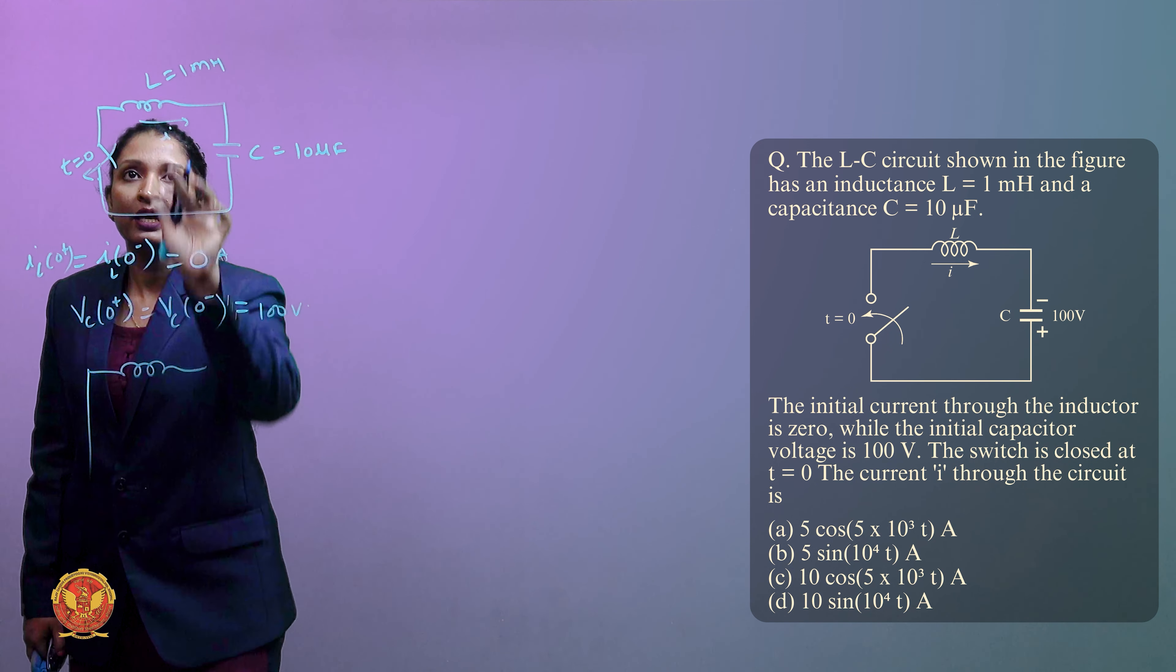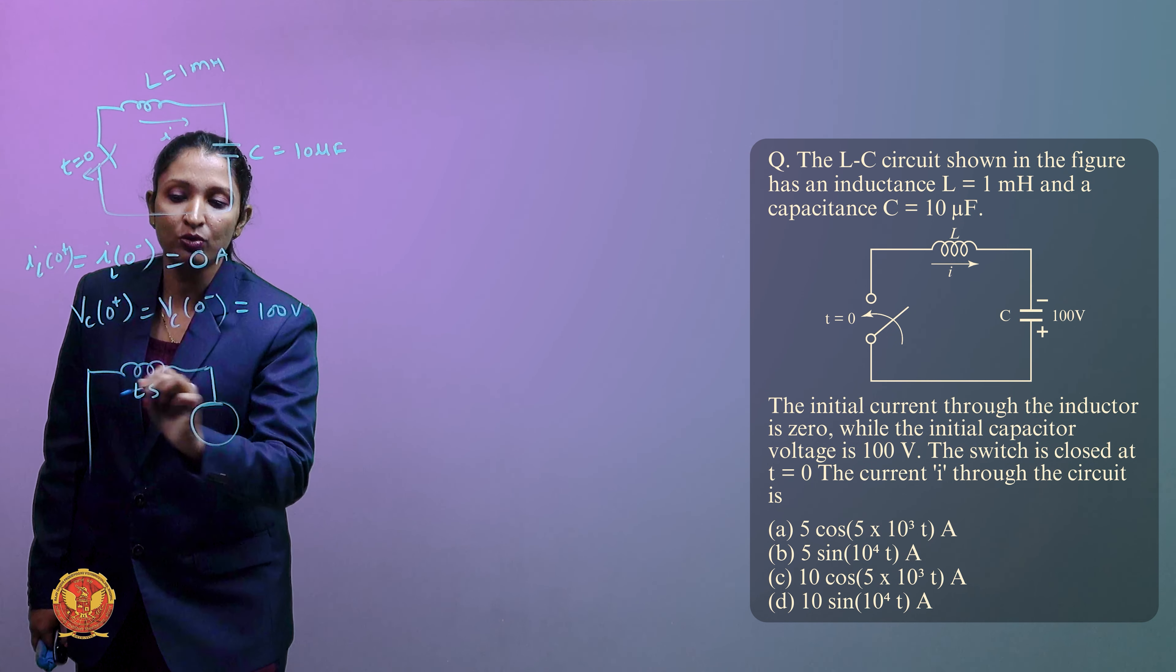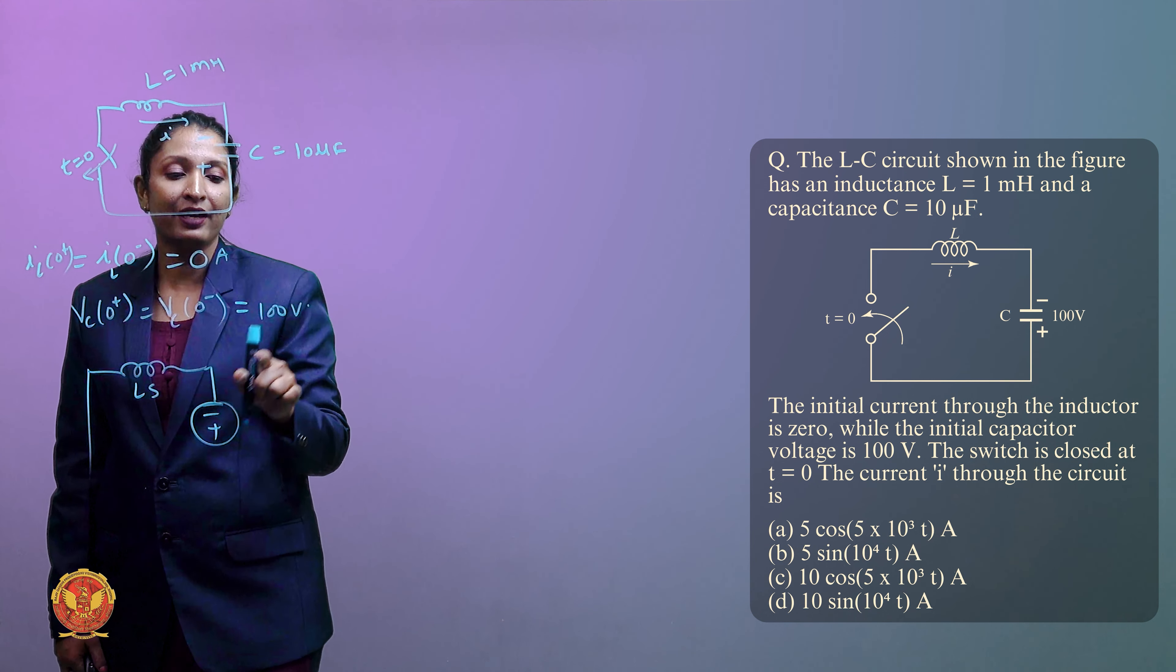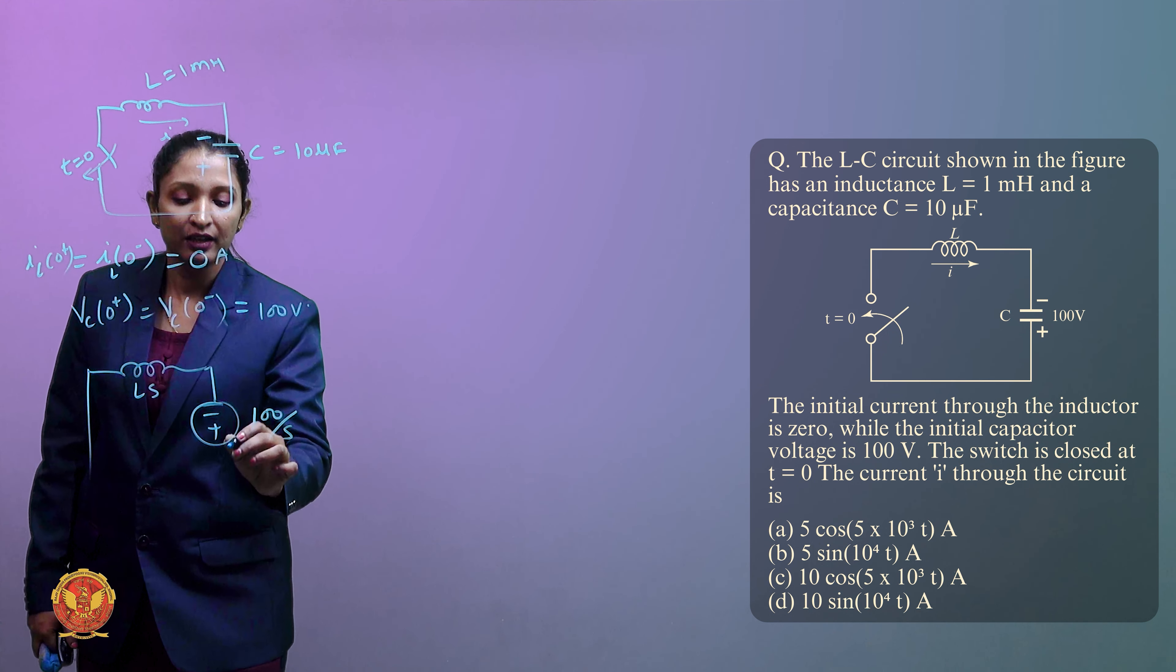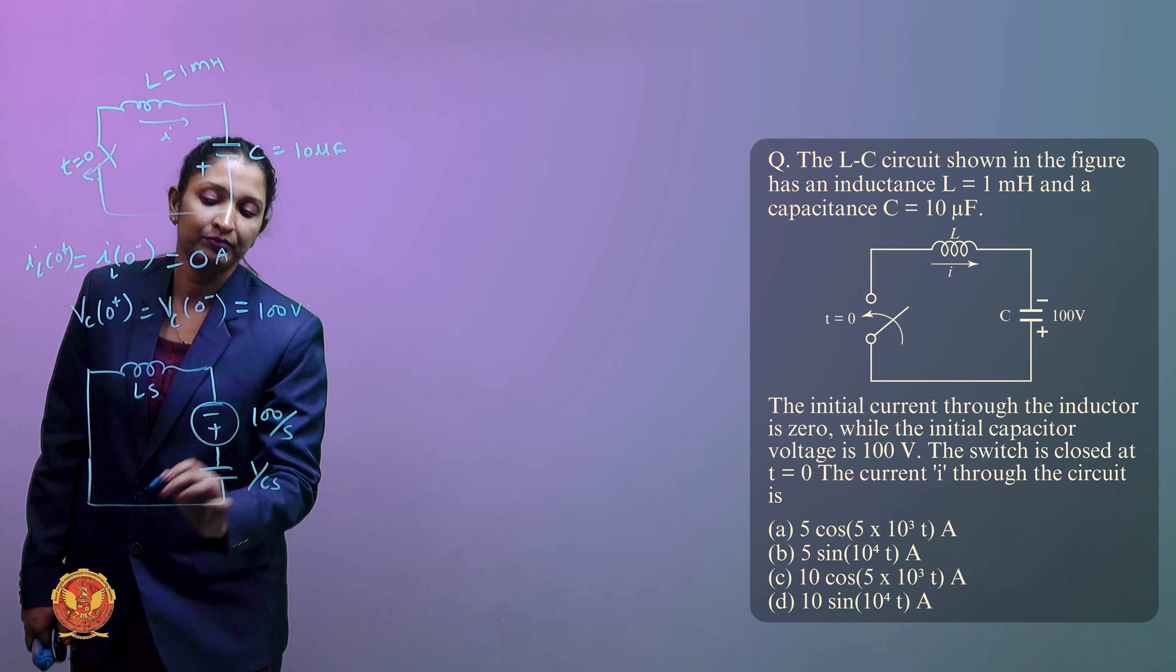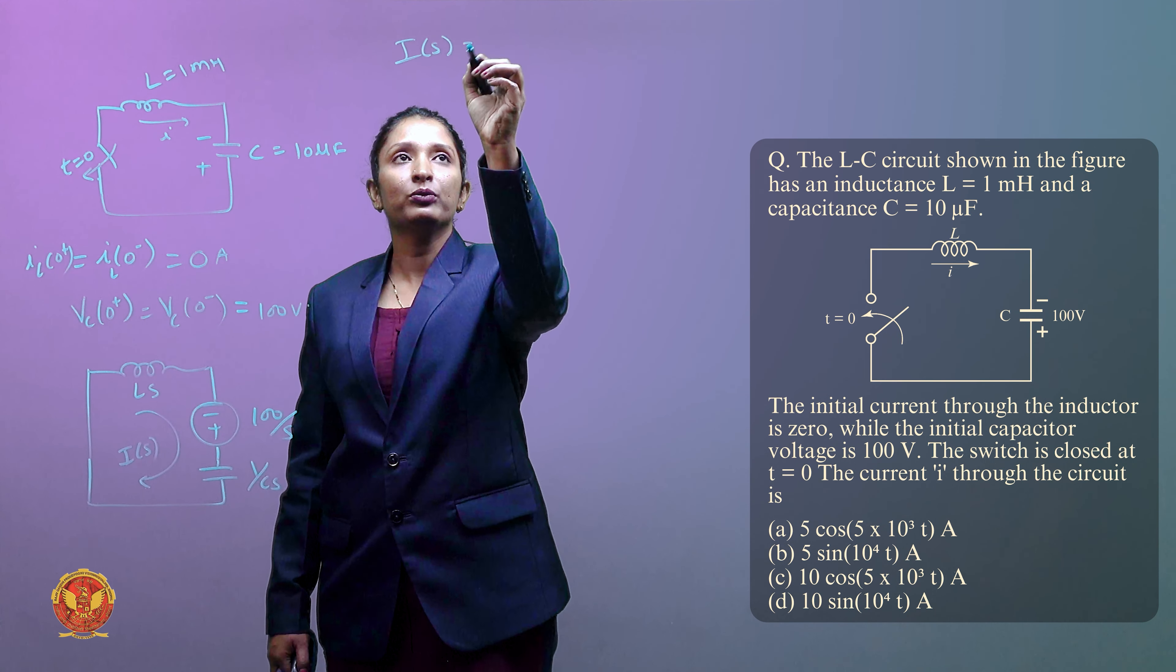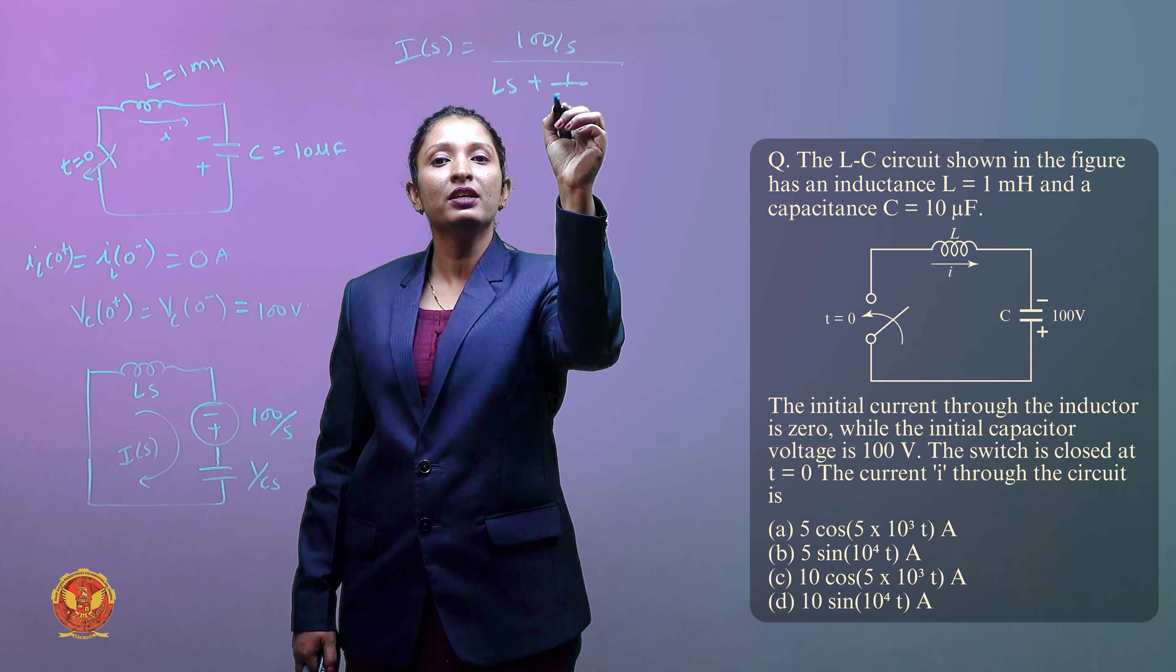What do we do in this circuit? The capacitor is the voltage source which becomes 100 volt, so the current is going to flow. The capacitor charge is 100 volts so this will be 100 divided by s. The inductor will be Ls, the capacitor 1 upon Cs. What is the current I of s? I of s is equal to 100 upon s divided by Ls plus 1 upon Cs.